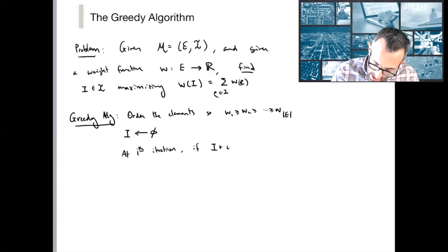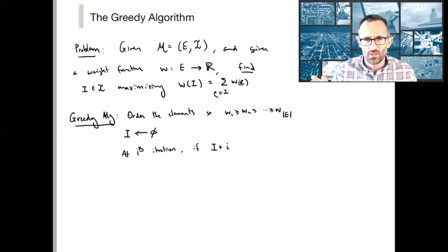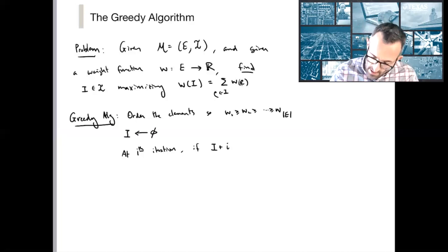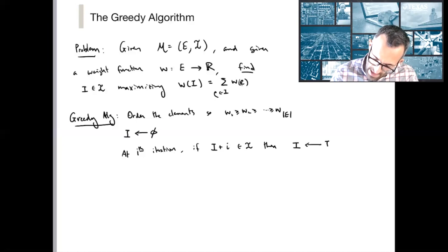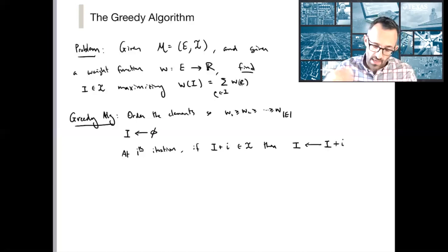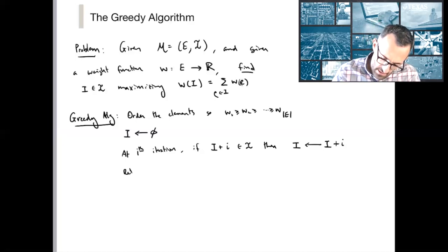At the i-th iteration, I'm looking at the i-th element. If I can add it, I add it; otherwise I pass and move on. In other words, at the i-th iteration, if the subset I have so far plus the i-th element is an independent set, then I update by adding that element. Otherwise I pass. At the end I return I.